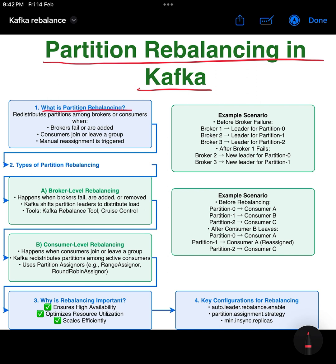Partition rebalancing occurs when Kafka redistributes partitions across brokers or consumers due to broker failures or new broker additions, consumers joining or leaving a consumer group, or manual reassignment to optimize load distribution. This process ensures that Kafka remains fault-tolerant and balanced, preventing overload on a single broker or consumer.